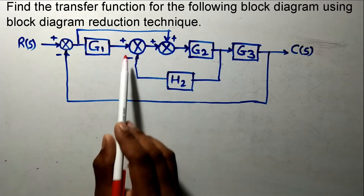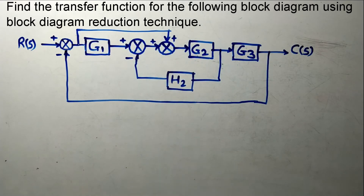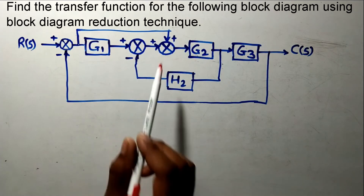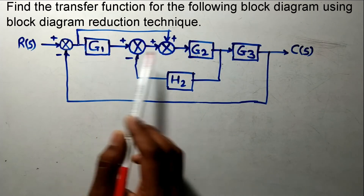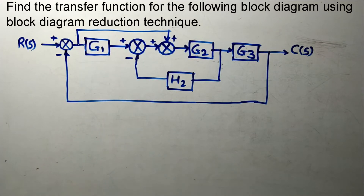See here carefully that you can have the feedback loop here, but this summing point should be there. None of the three rules are applicable here. So let us move toward the next rules — whether you can split the summing point. The summing points are given here and here, but you cannot apply splitting. The next rule for block diagram reduction is the interchanging of summing points.